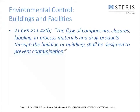Regarding buildings and facilities, the flow of components, labeling, and in-process materials and drug products through the building shall be designed to prevent contamination. The flow of products is very important — this is one of the first questions we ask when a facility has a contamination issue. For example, a changing room next to a warehouse is an area where contamination is prevalent due to cardboard, frequent traffic, and doors opening and closing. Many facilities decontaminate items brought in prior to entering the clean room.